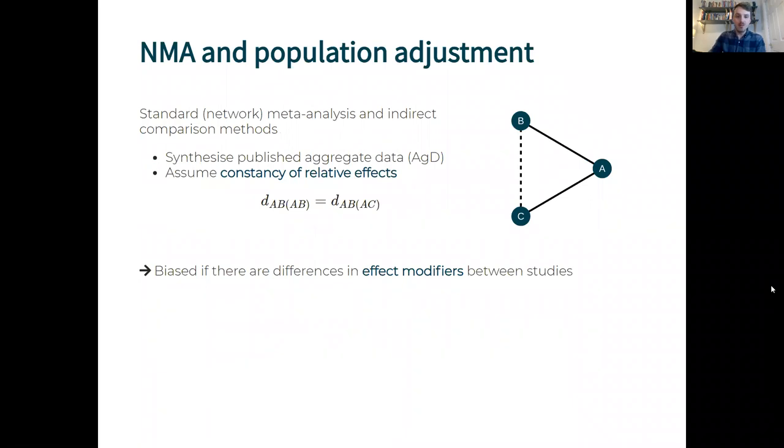Standard network meta-analysis and indirect comparison methods synthesize published aggregate data from each study, assuming constancy of relative effects. So for an indirect comparison that means that the AB effect that we see in the AB study is exactly the same as we'd expect to see in the AC study if that study had included a B arm as well.